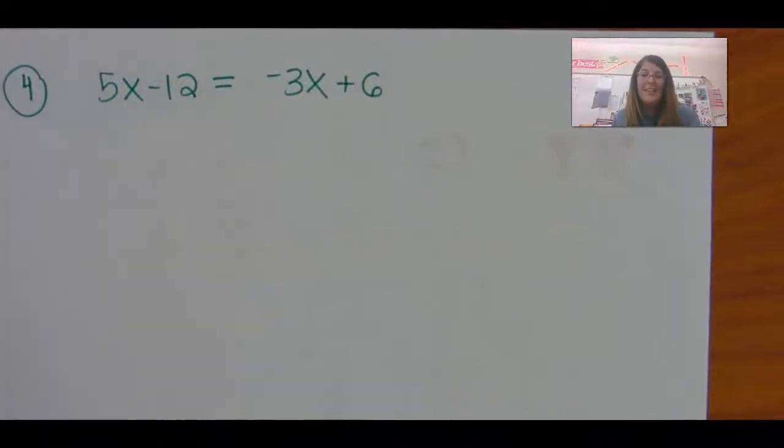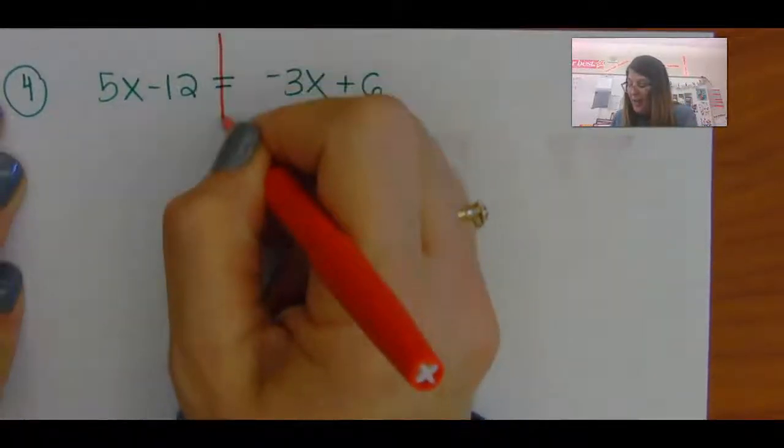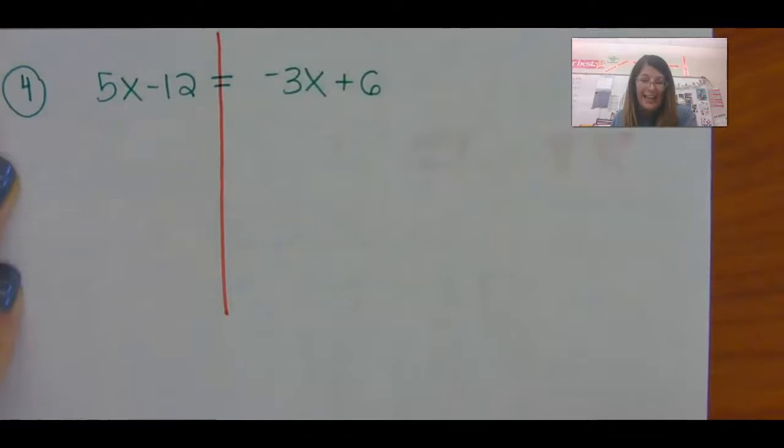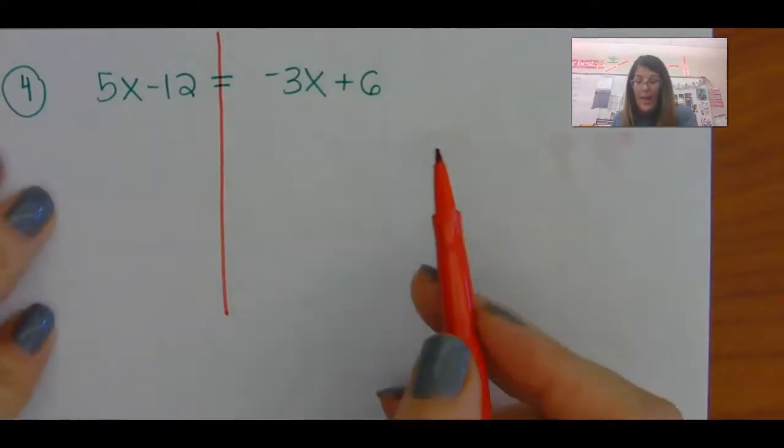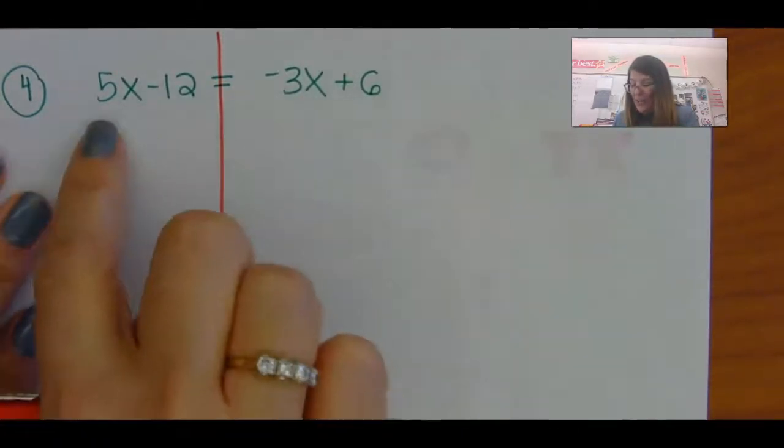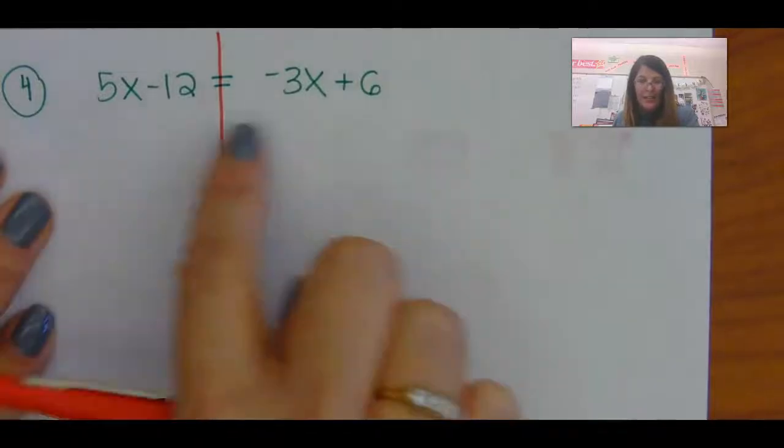So if I'm solving this equation, I need to draw this line in the middle to help. I want the x's all together. The last thing you want to do is add across the equal sign.